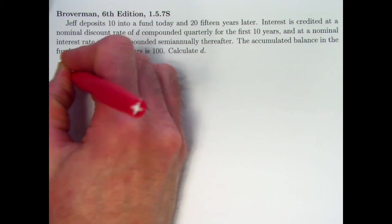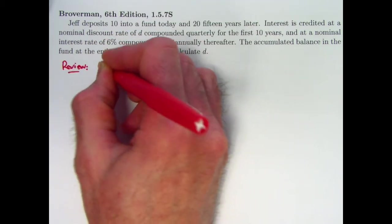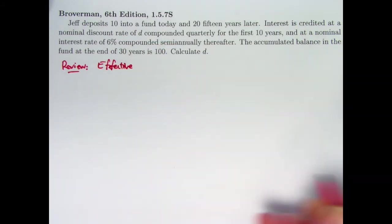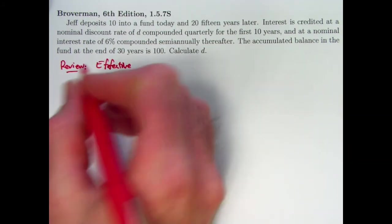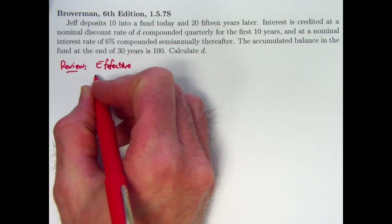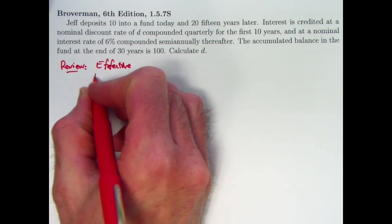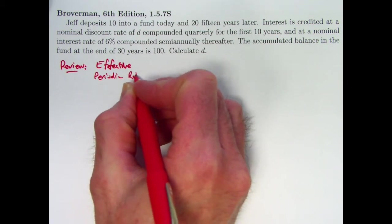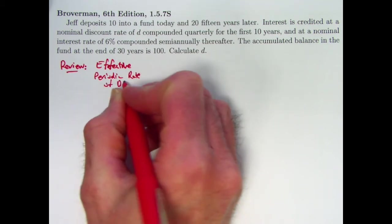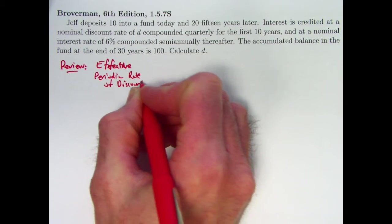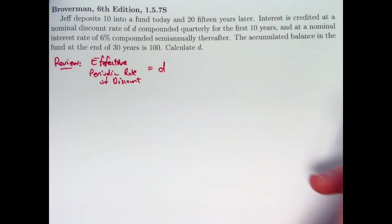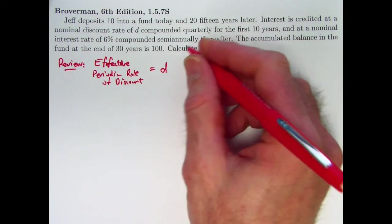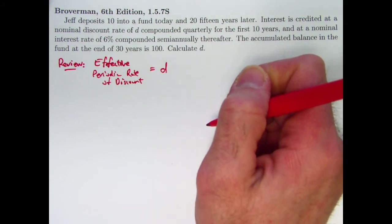But before we do that, I think it would be good to review the idea of a rate of discount that I introduced in the last video. So here's the problem, but let's ignore the problem for the moment and review. Last video I introduced the idea of an effective rate of discount, though this D will be different both in value and as an idea from the D that we end up calculating for this problem here.